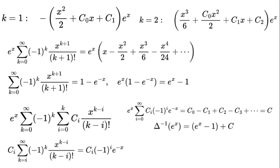Since c is an arbitrary constant, let's call it c prime equals c minus 1. Delta to the power of negative 1 times e to the power of x equals e to the power of x plus c prime. Wow, that's exactly the antiderivative of e to the power of x. The constants magically combine into one, showing our framework is rock solid. When we move to definite integrals, those constants will cancel out, making things even smoother.